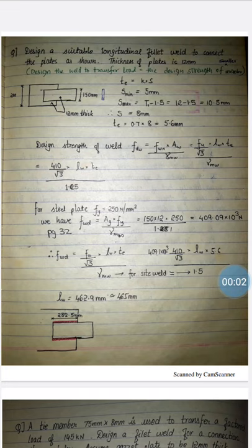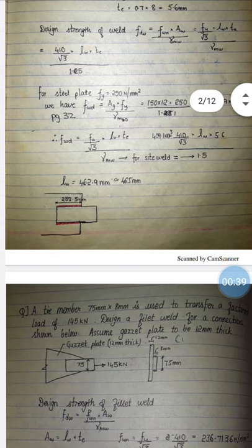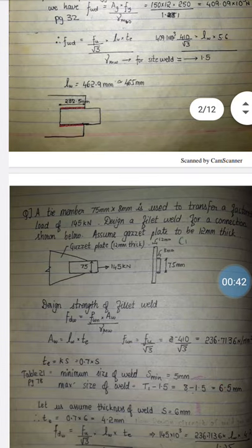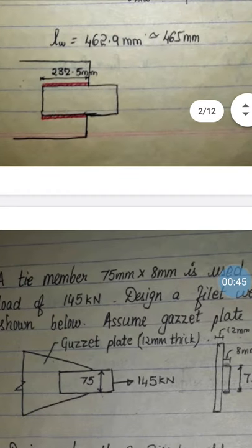Good afternoon students. Today we are here to discuss the next part of our syllabus. Before starting, I want to recap what I covered in the last class. In the last class, we solved problems on design of fillet weld — problems like two plates connected over each other, where we designed the welded connection and provided the weld equally on both sides.